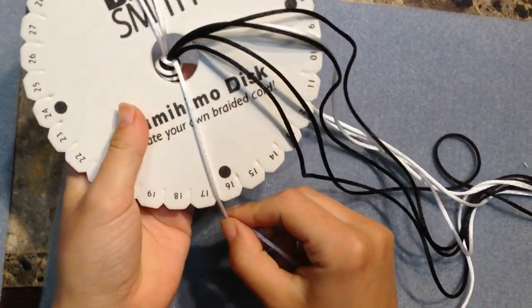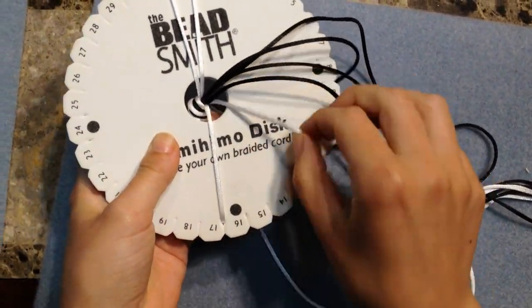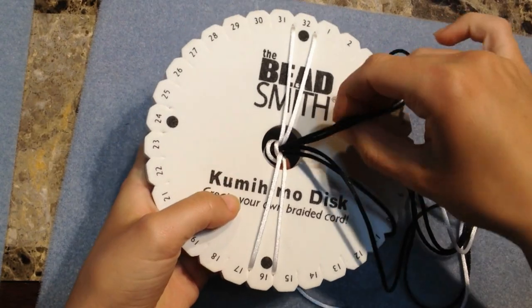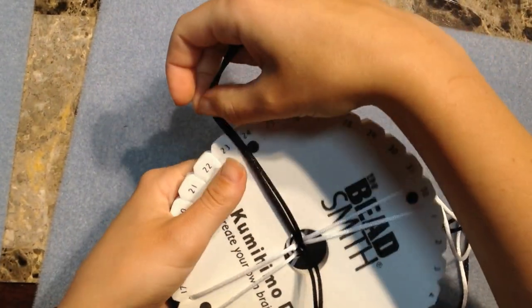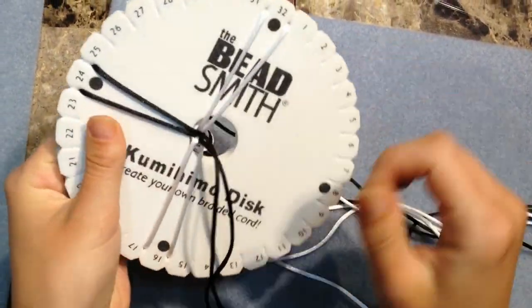So I'm going to have my whites at the top and bottom and I'm going to have my black cord on either side.